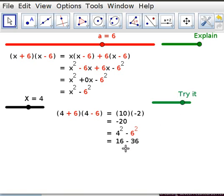So if we go through that, we've got 16, which is 4 squared, minus 36, which is 6 squared. And look, 16 minus 36 is equal to minus 20. Isn't that amazing?